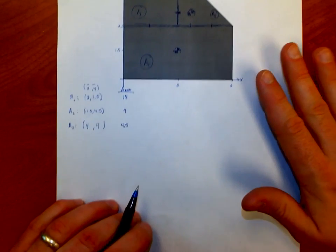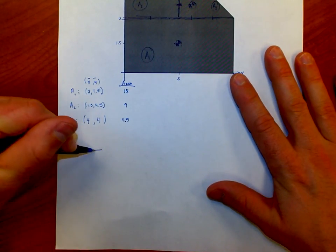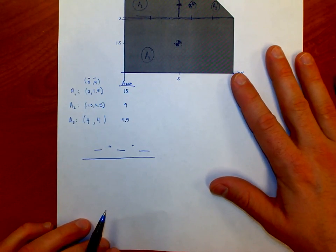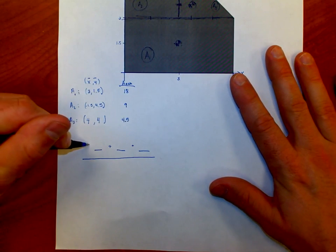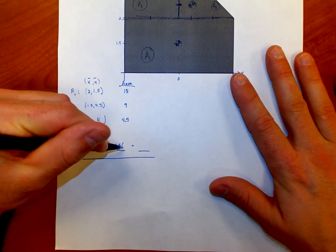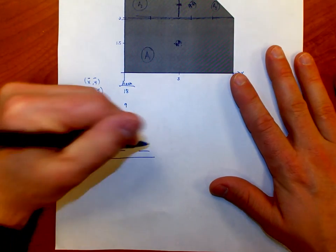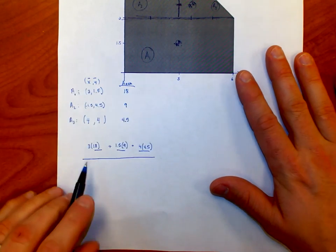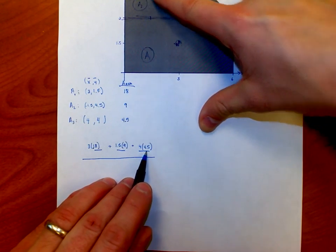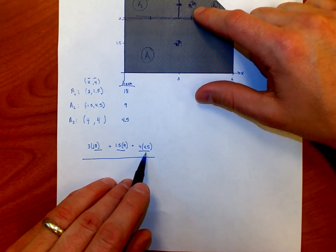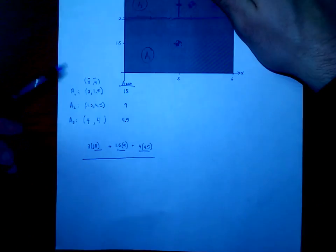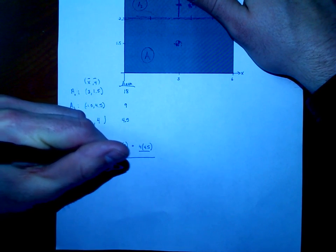So what I do is this. Instead of just adding the three numbers up and dividing by three, what I'm going to do is take the three and multiply it by its area of 18. I'm going to take the 1.5, notice I'm doing just the X coordinates, I'm going to multiply it by the nine. I'm going to take the four, I'm going to multiply it by the 4.5. And what that does is now it takes into account that that three pulls a lot more weight. If I add those up and I divide by the total area of the shape, the total area of this entire shape would be 18 plus nine plus 4.5.